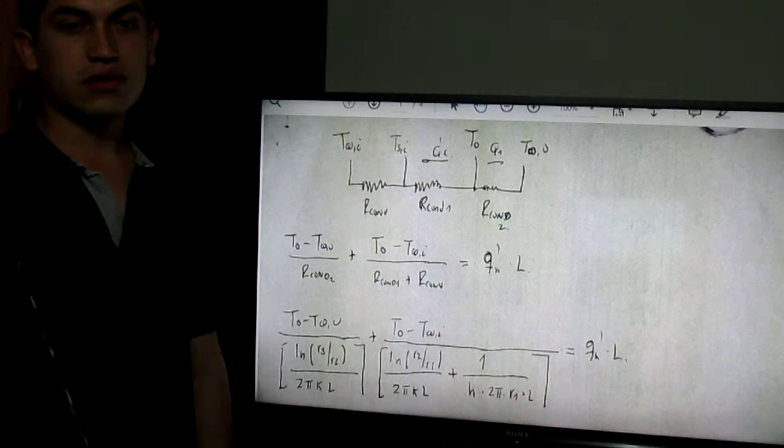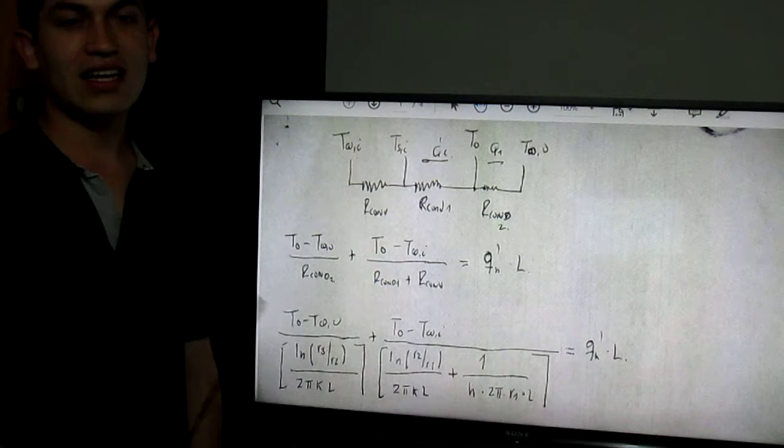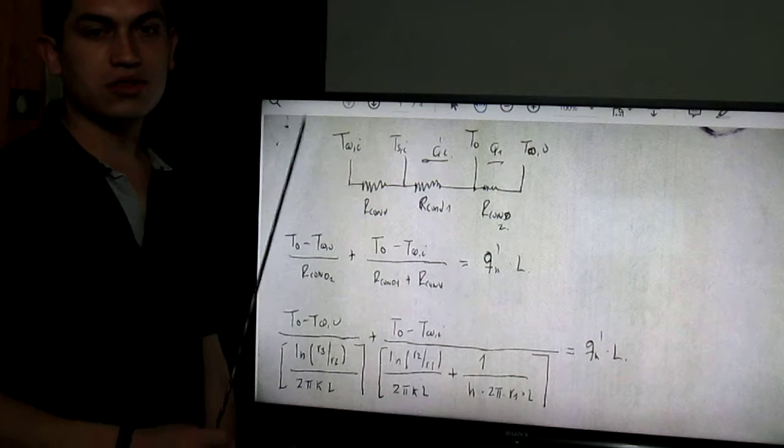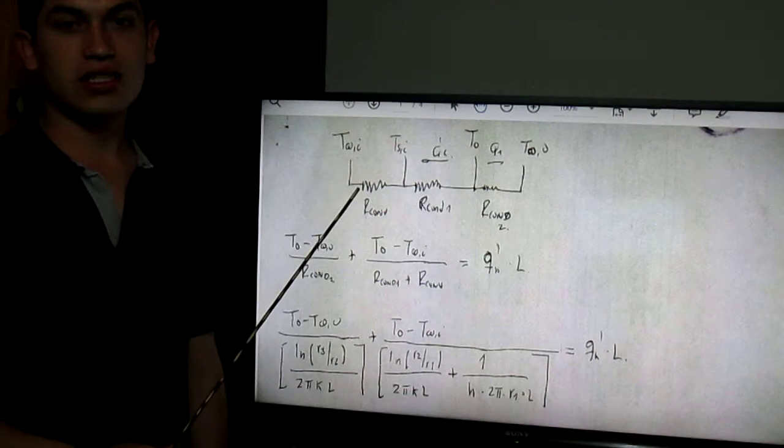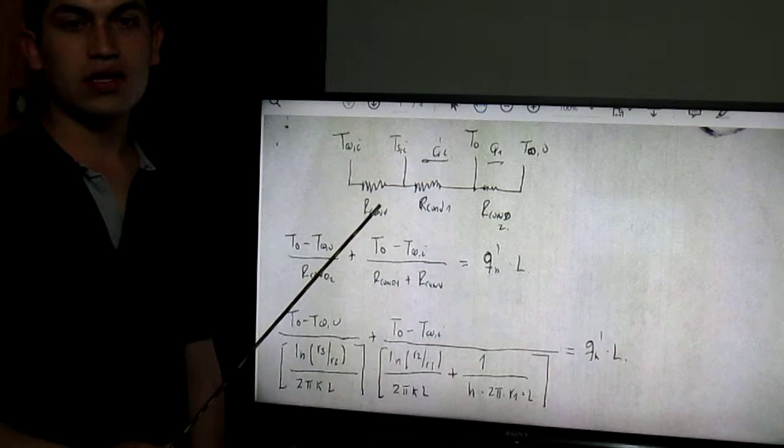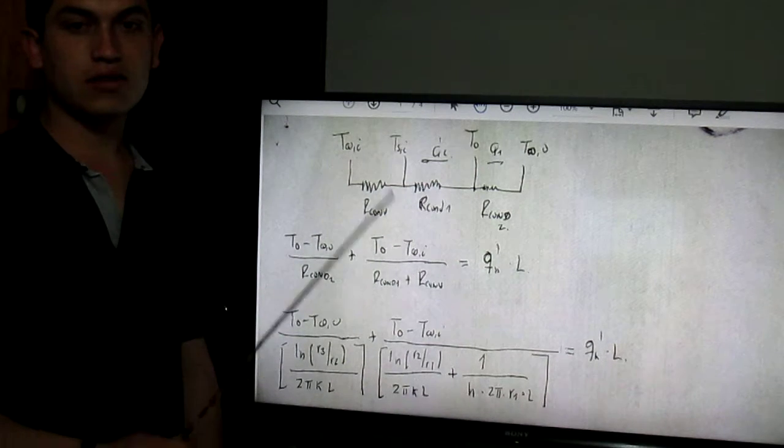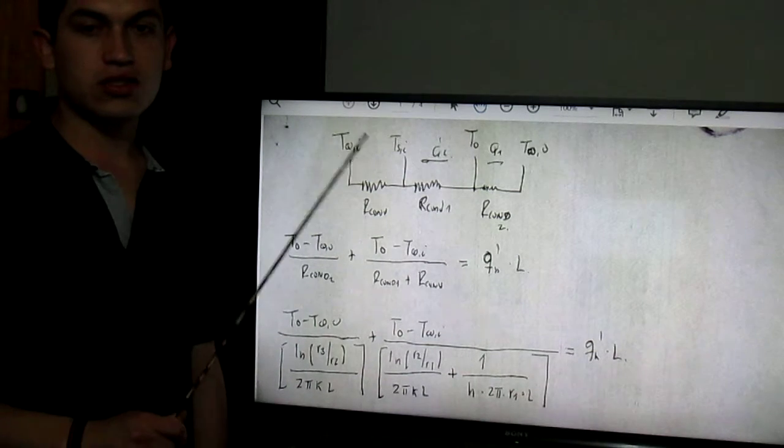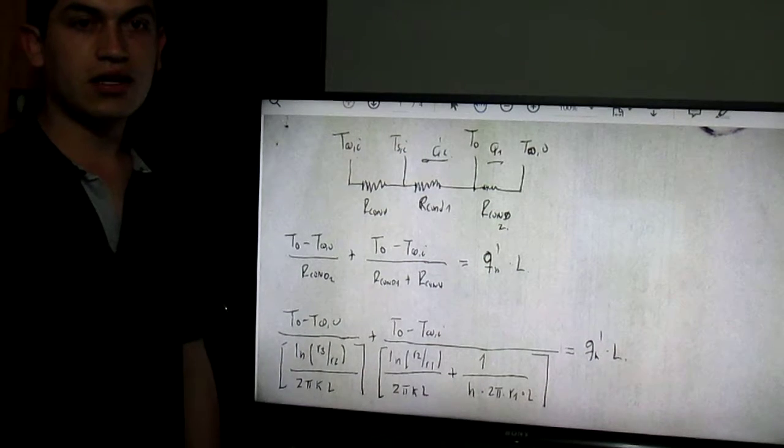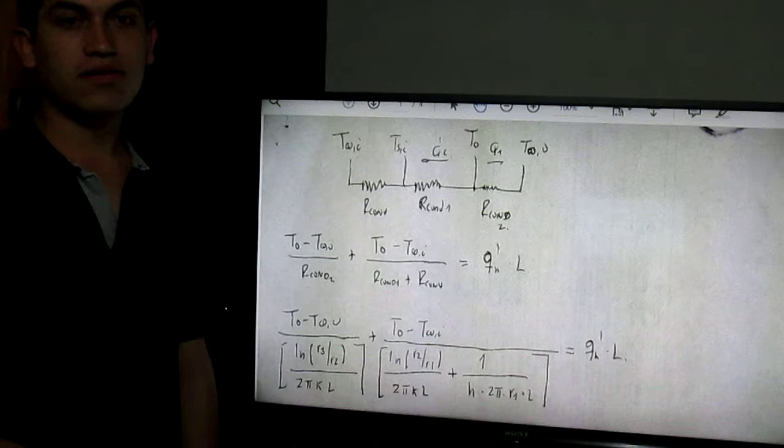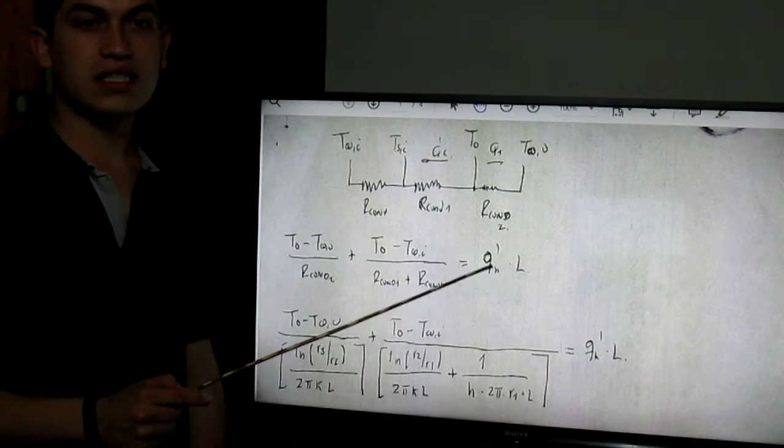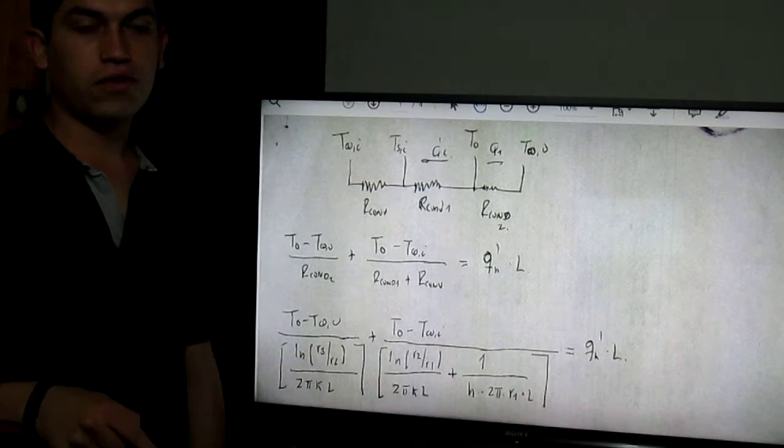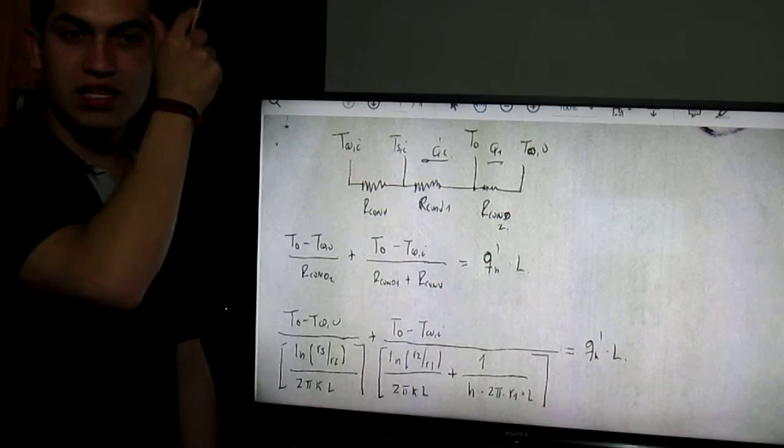The outer surface radius R L3 has an emissivity of epsilon and is maintained at temperature TS. The temperature of the air is of the same order of magnitude as the convective heat transfer coefficient between the outer surface and ambient air is H sub O. Under steady state conditions a uniform heat flux per unit length of the cylinder of QH watts per meter is dissipated by the heater.